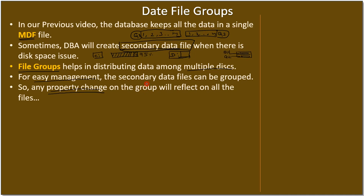If you make a property change on the group it will reflect on all the files within it. Say there are M files in a group — if you make a property change on Group 1, it gets reflected on all those files. Without grouping, if you have N files and want the same property change applied to all, you would have to manually set it on each file, which is tedious. That's why DBAs create file groups — a common property change applied to the group reflects on all secondary data files.